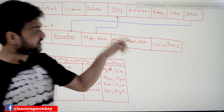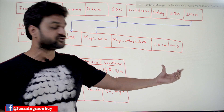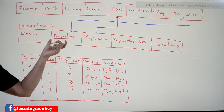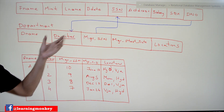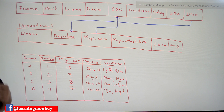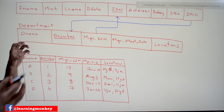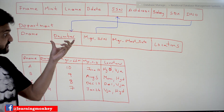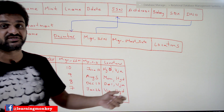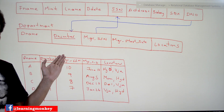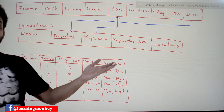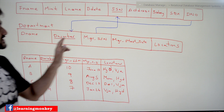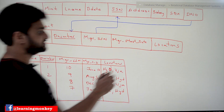So, we create a separate table, and this table will obviously have a 'locations' column. Apart from this, it is combined with the primary key of the original table. The primary key of the department table is 'department number.' We combine department number with department locations because these locations belong to a department — that relationship has to be captured.